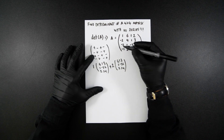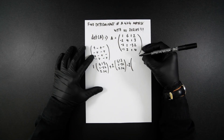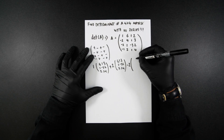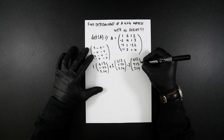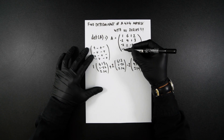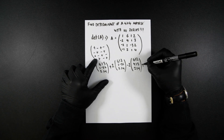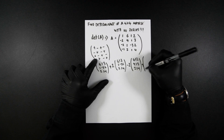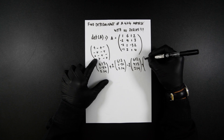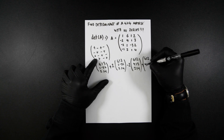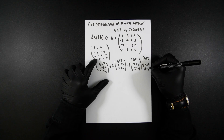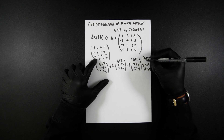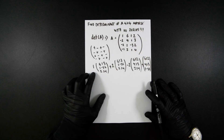Then we'll pick minus 2. So we cover minus 2 across there, and we're going to get those values. Minus 2 is positive, so minus 2, and we will have 6, 1, 2, 4, 1, 3, 2, 1, 4. And then lastly, we have minus 1, which is also negative, so it'll be positive here. And we will then have 6, 1, 2, 4, 1, 3, 1, minus 3, 2. So that is this determinant expanded out.